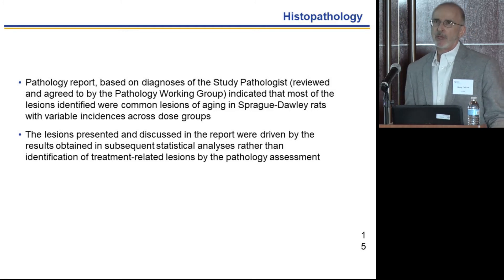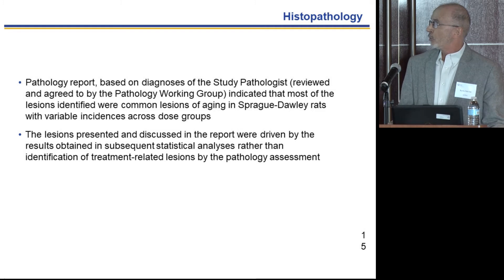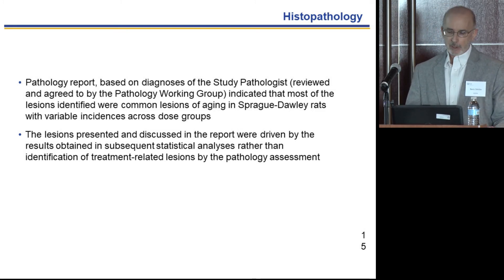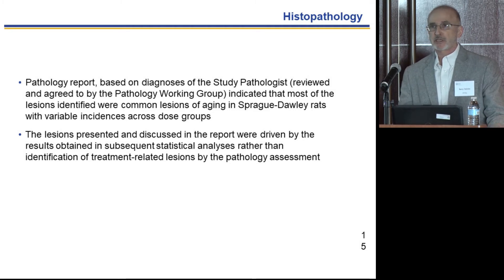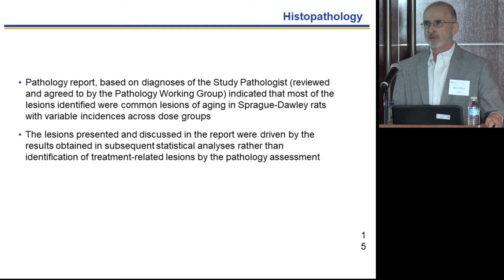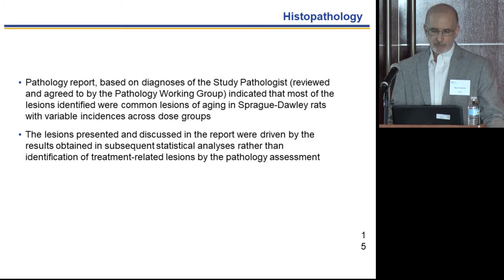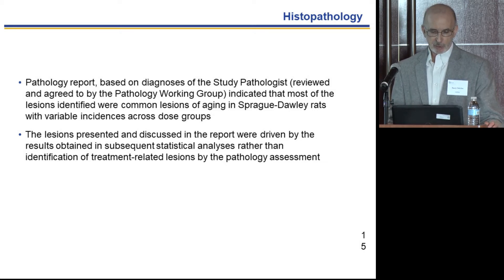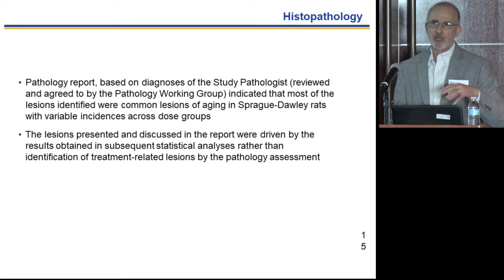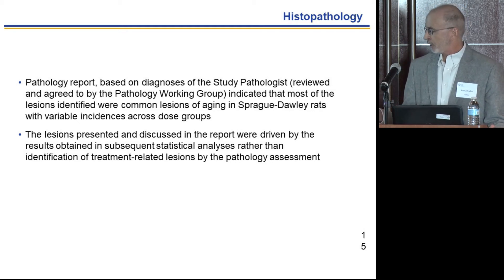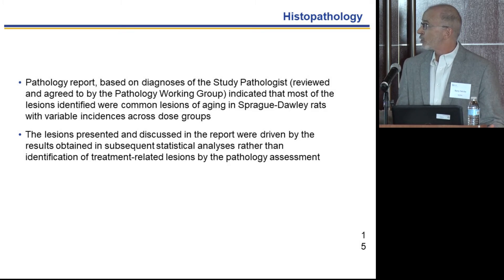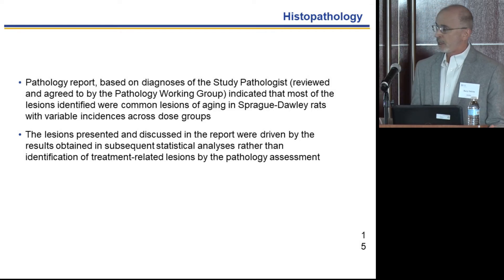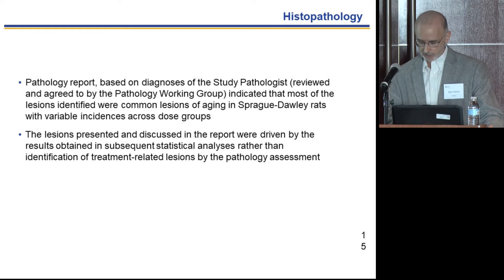The most important endpoints were the histopathology endpoints. The pathology report was based on diagnosis by the study pathologist, and as is common in NTP studies, quality assurance pathologists reviewed the findings, along with a pathology working group of independent pathologists. The pathology report indicated that most findings were common lesions, not rare lesions, and it was difficult for pathologists to identify specific effects they felt were treatment related. The lesions discussed in the report were driven by statistical analysis results rather than identification of treatment-related lesions by pathological assessment.